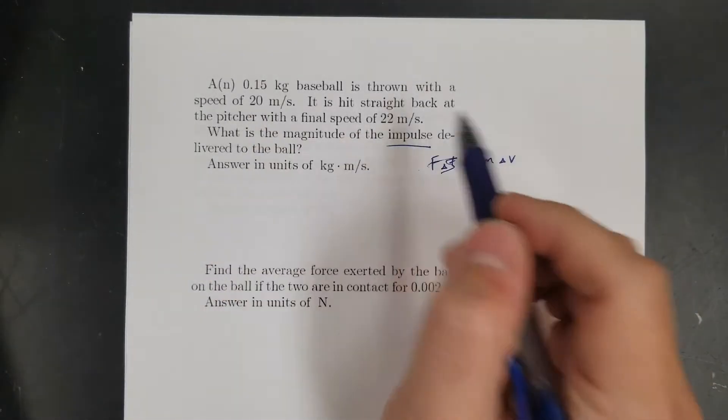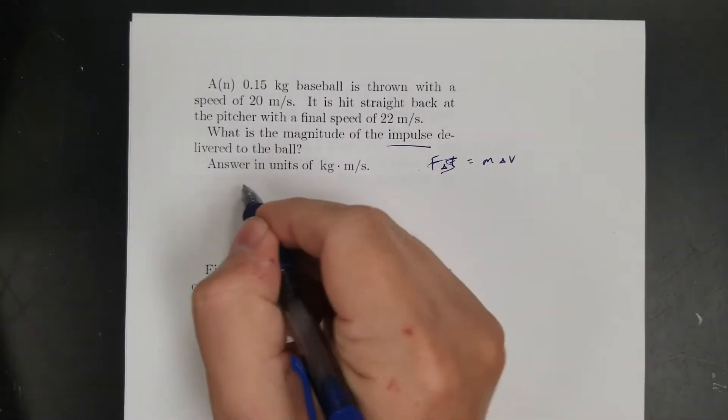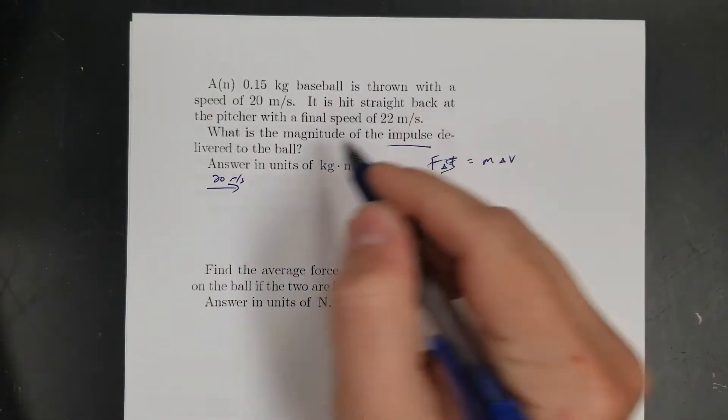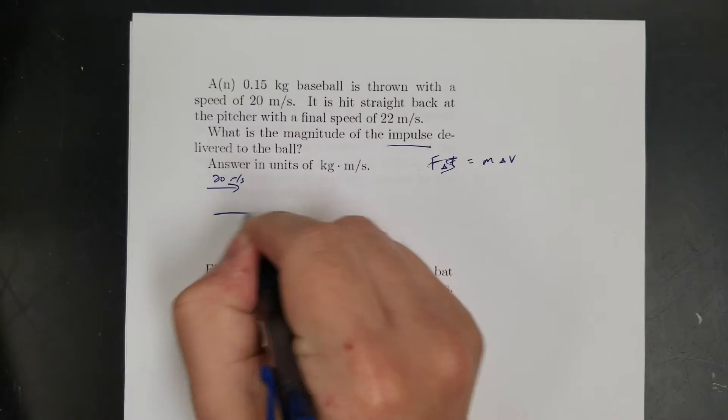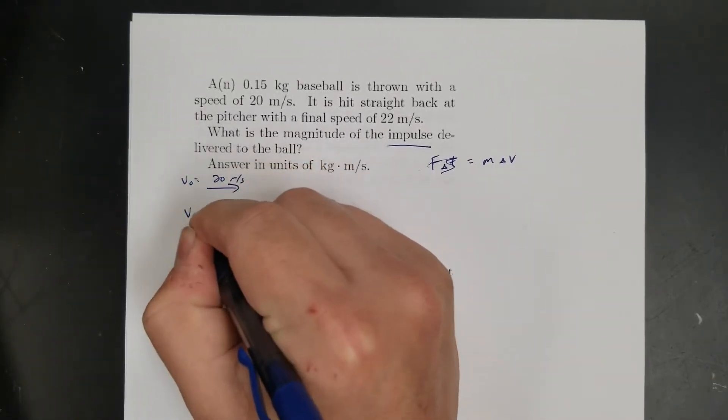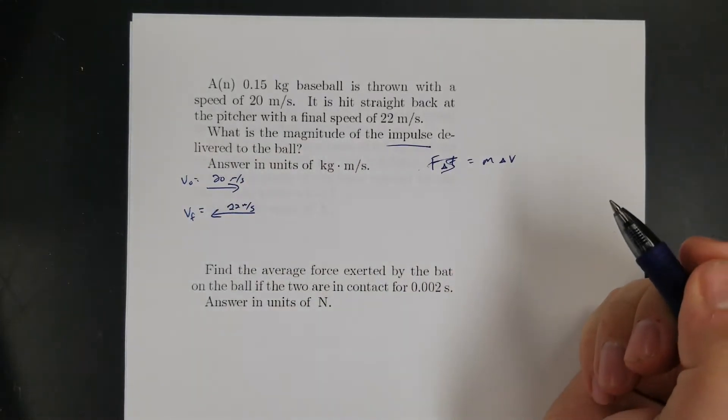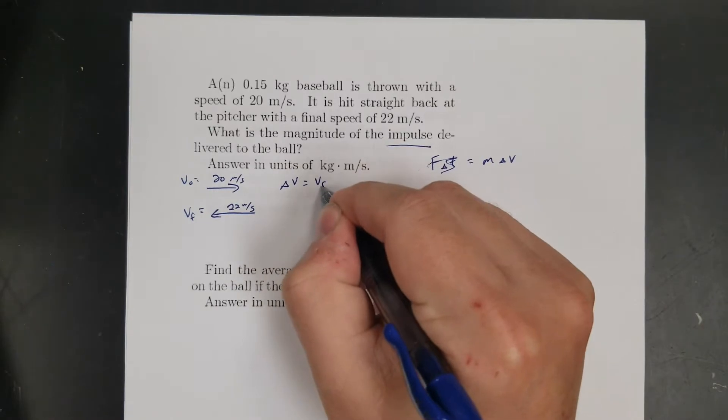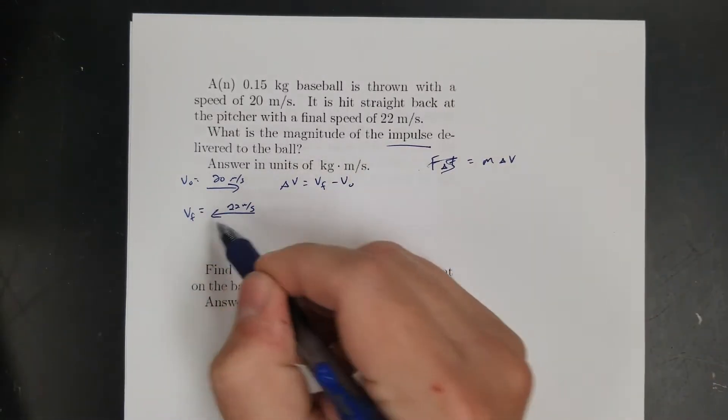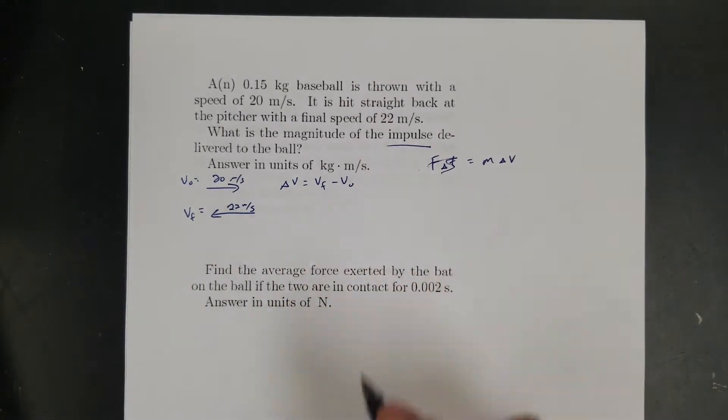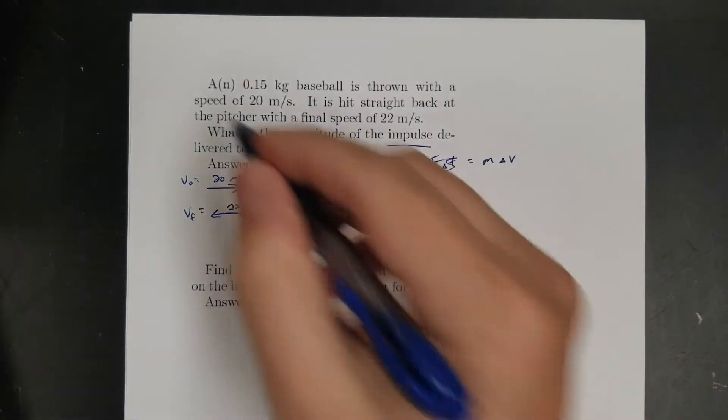So yeah, I'm going to have to use these velocities. So it was going 20 meters per second, and then it's hit straight back at a speed of 22 meters per second. So here's my initial, and here's my final, right? So that means my change in velocity is final minus initial, and those are opposite directions, right? So if I subtract those two vectors, they end up adding. So let's do it this way. Let's call positive to the right.